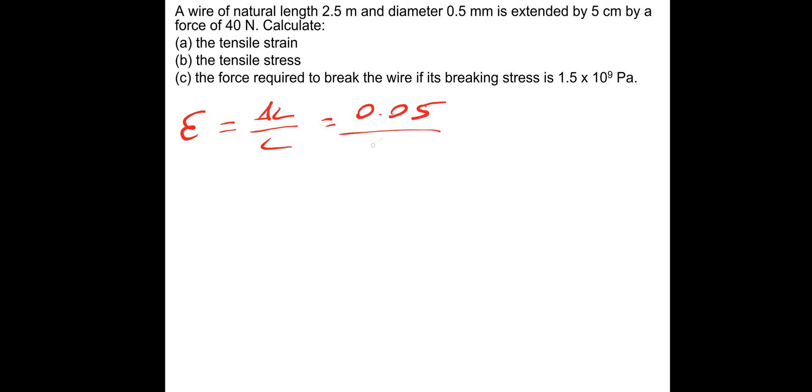Using those two equations, let's have a go at this. A wire of natural length 2.5 metres and diameter 0.5 millimetres is extended by 5 centimetres by a force of 40 newtons. Calculate the tensile strain. The equation is: strain equals change in length divided by original length. The change in length is 5 centimetres, so 0.05, divided by the original length 2.5 metres. That gives a strain of 0.02.